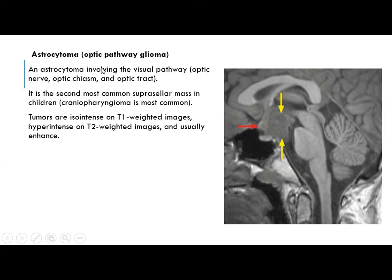Astrocytoma, or optic pathway glioma, involves the visual pathway — the optic nerve, optic chiasm, or optic tract. It is the second most common suprasellar mass in children (first is craniopharyngioma). The tumors are iso-intense on T1-weighted imaging, hyper-intense on T2-weighted imaging, and usually enhancing. On sagittal imaging, there is a well-defined suprasellar mass, but the pituitary and optic chiasm will not be enlarged by an intrinsic mass.